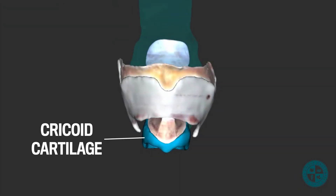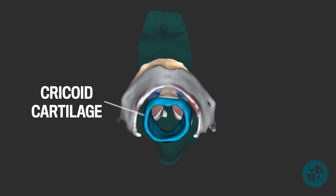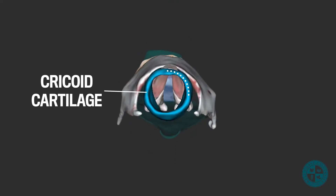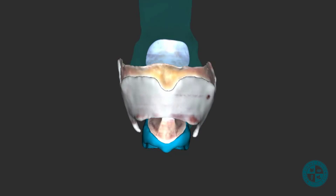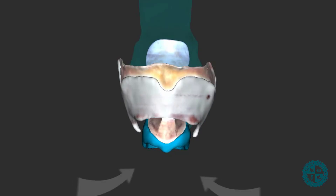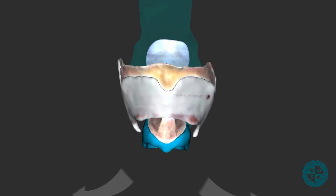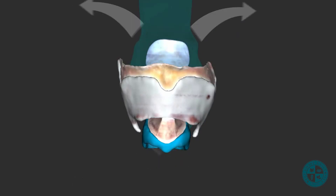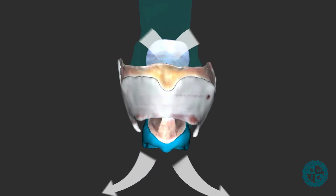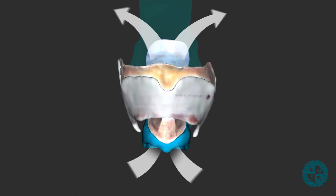The cricoid cartilage is inferior to the thyroid cartilage and forms a complete circle. Cartilage serves an important function throughout the lower respiratory tract because it keeps the airway open to ensure the efficient movement of air into and out of the lungs.